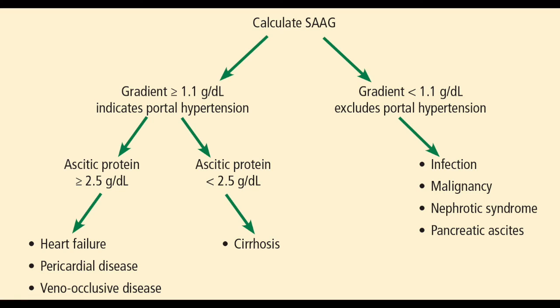Next is the SAAG — serum ascites albumin gradient. You measure the albumin difference between serum and ascites. The way to remember the order is it follows the name: serum minus ascites. If the score is greater than 1.1 that indicates portal hypertension.